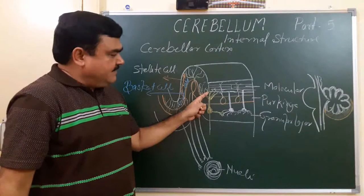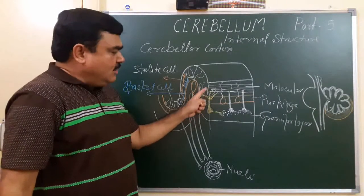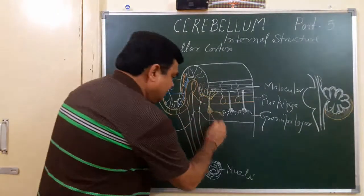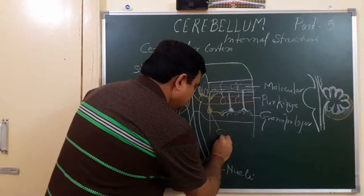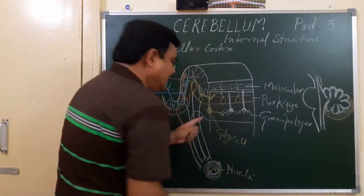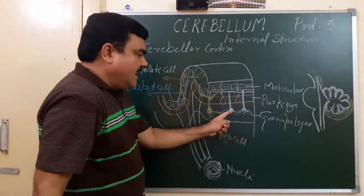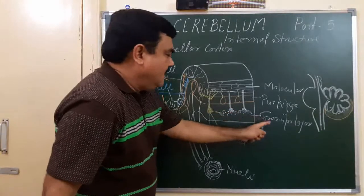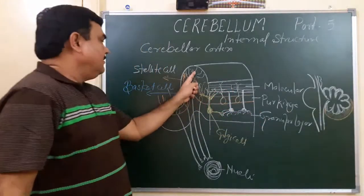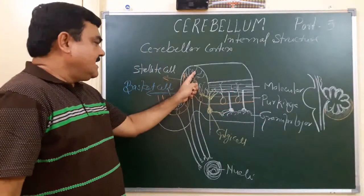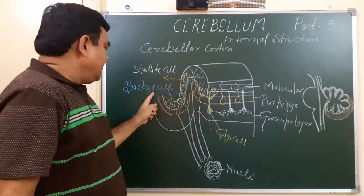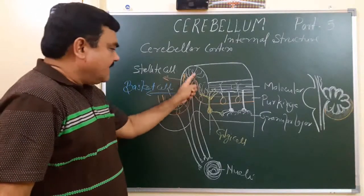So now you can see that in the molecular layer the following are present: the dendrites of the Golgi cells, the axons of the granule cells (parallel fibers), the dendrites of the Purkinje cells, and the stellate cells and basket cells.